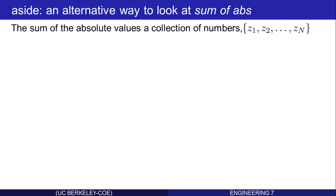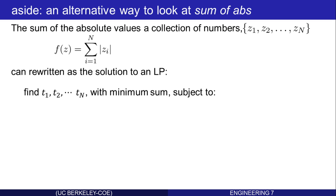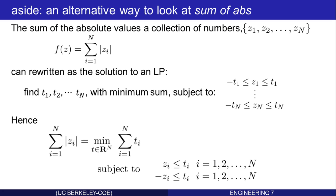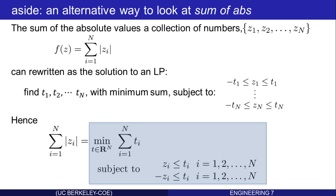How about a sum of absolute values? The sum of the absolute values of a bunch of numbers can also be rewritten as a linear program. Find t1, t2, up to tn with minimum sum, subject to the constraint that each ti is greater than its corresponding zi and greater than its corresponding negative zi. The summation of the absolute values of the z's equals the smallest possible summation of ti's subject to ti ≥ zi and ti ≥ −zi. That is a linear program in standard form.